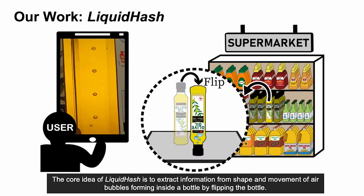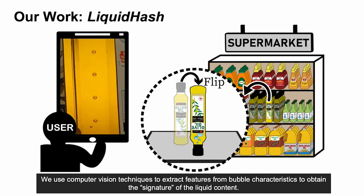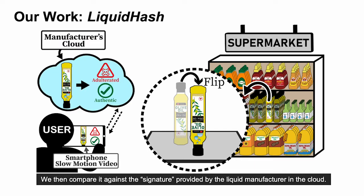The core idea of Liquid Hash is to extract information from the shape and movement of air bubbles forming inside a bottle by flipping the bottle. The bubble characteristics exhibit liquid properties such as density, viscosity, and surface tension. We use computer vision techniques to extract features from bubble characteristics to obtain the signature of the liquid content. We then compare it against the signature provided by the liquid manufacturer in the cloud. This process is analogous to a hash checksum verification, hence the name Liquid Hash.